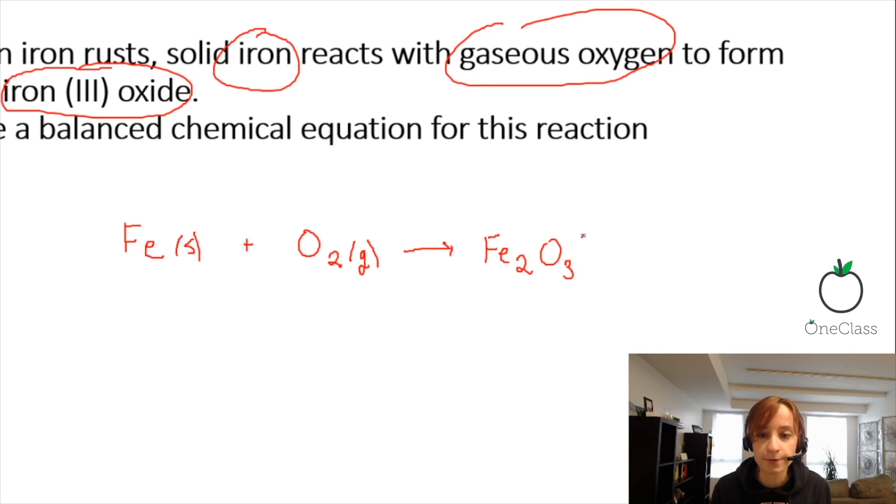So the way you figure out how the molecular formula is, especially when it's written out like this. So iron has 3, is 3 plus. Oxygen is 2 minus. So you just cross them over to get iron 2, O3.